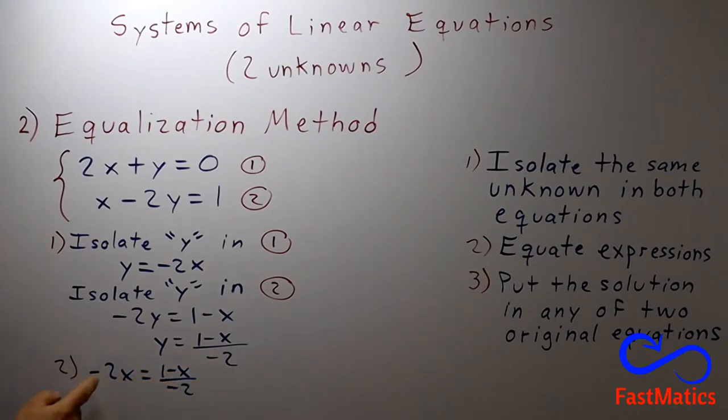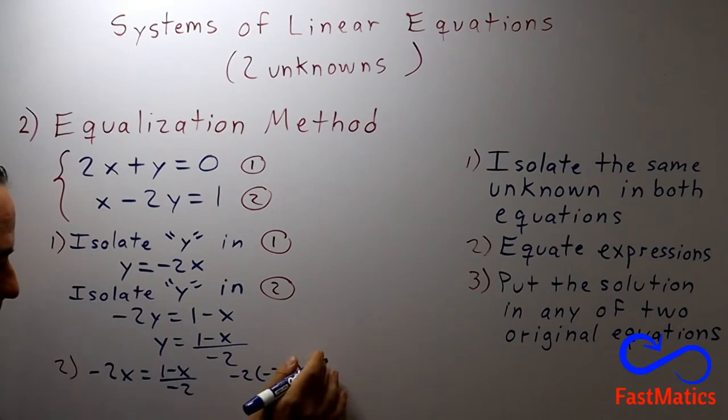And for solving it generally we multiply all the equation by the least common multiple of denominators. But here it is very simple. I can pass negative 2 to this side. And I will have negative 2 times negative 2x equals 1 minus x.